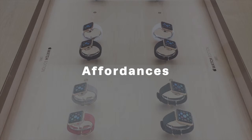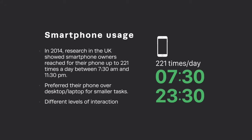Let's start by talking about affordances — some of the assumptions we can make based on the fact that people are wearing this device on their wrist. We've all been using smartphones for quite a while. I found a study in the UK from last year asking people how many times they reached for their phone in a given day, and a lot of people said up to 200 times a day between 7:30 in the morning and 11:30 at night. The survey also asked what they were doing, and most said they were doing tasks that didn't really make sense to do on a Mac or desktop.